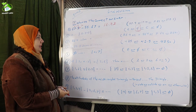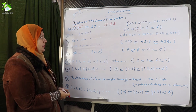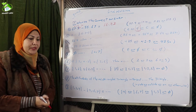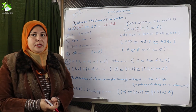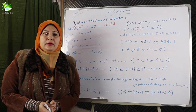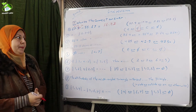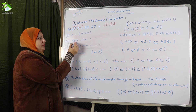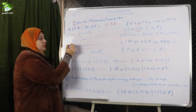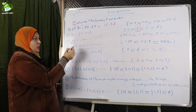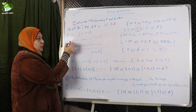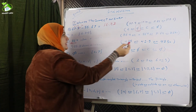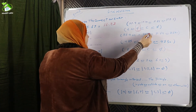Number three: 86.4 divided by one hundred. When we divide any decimal number by one hundred, we should move the decimal point to the left two places. So the result will be 0.864.